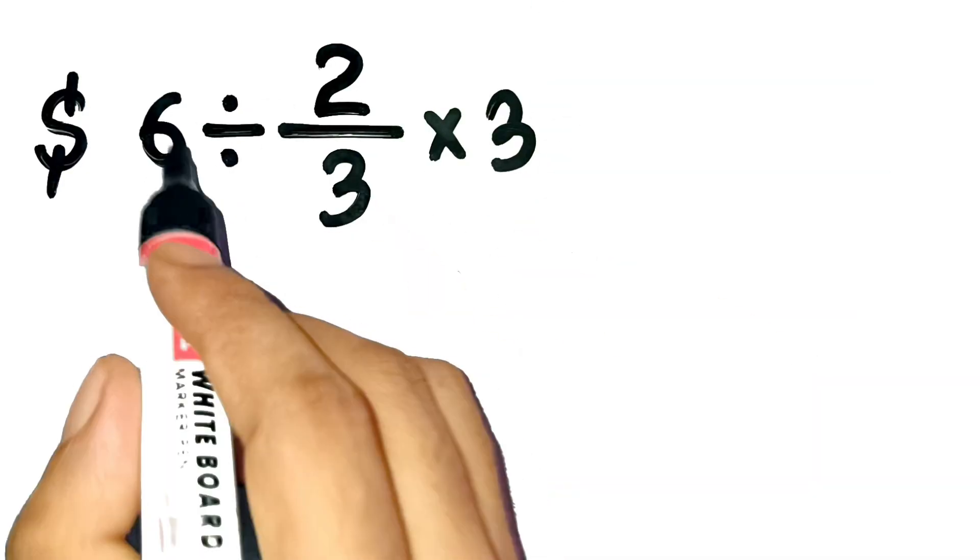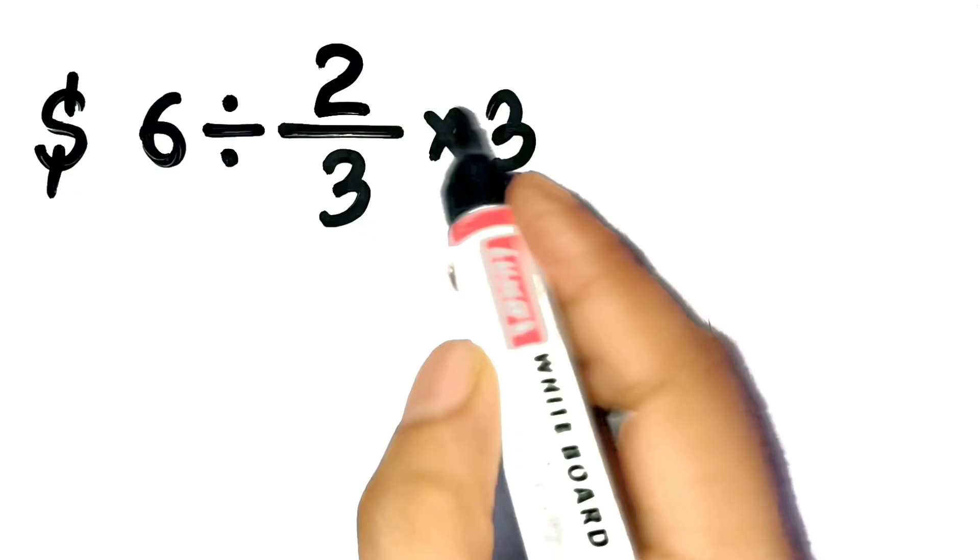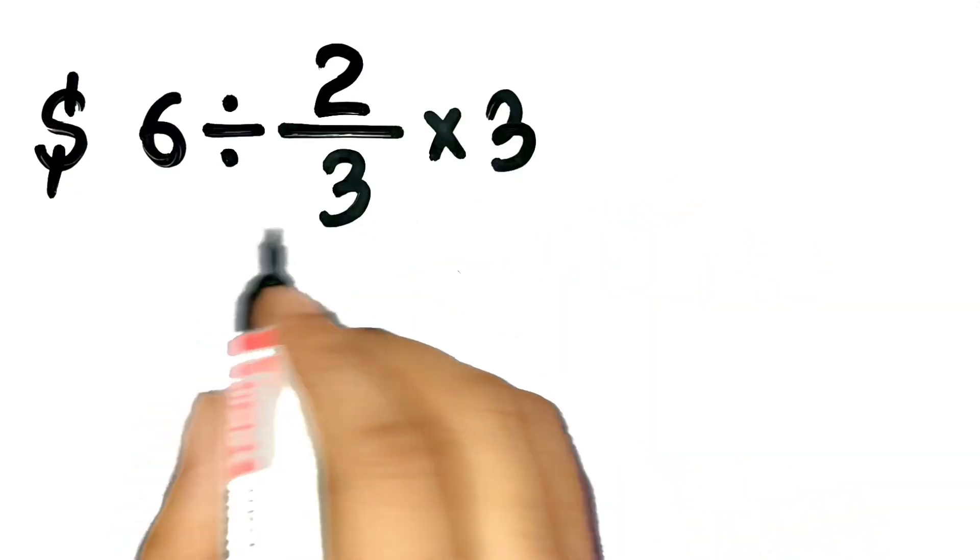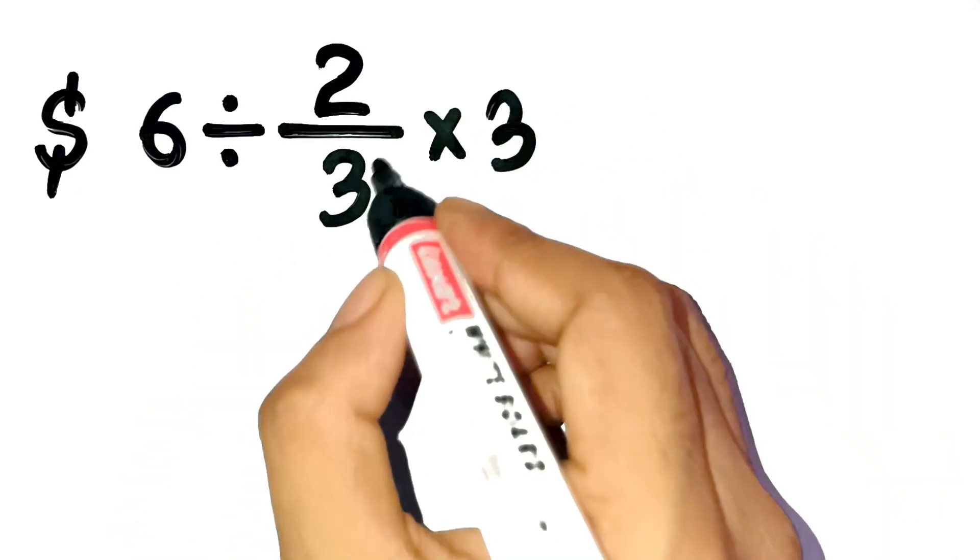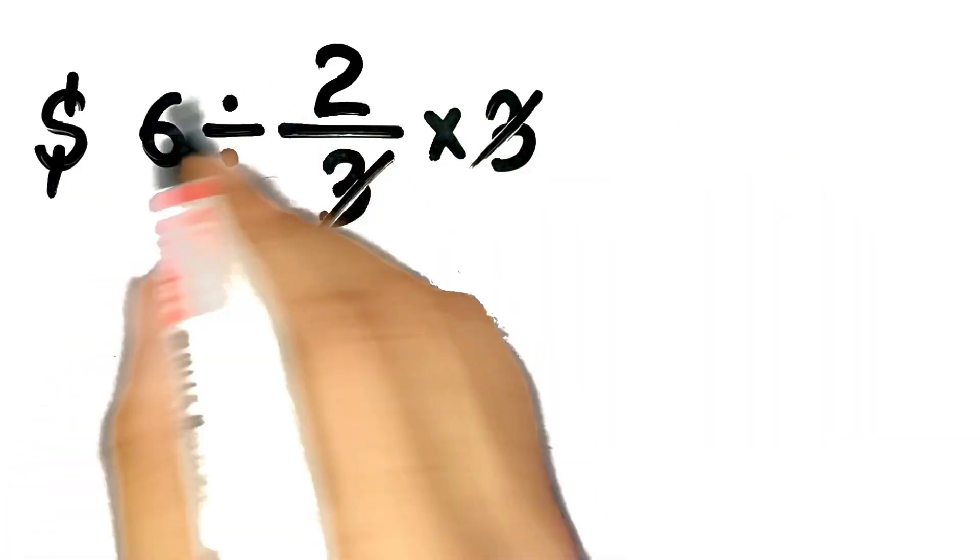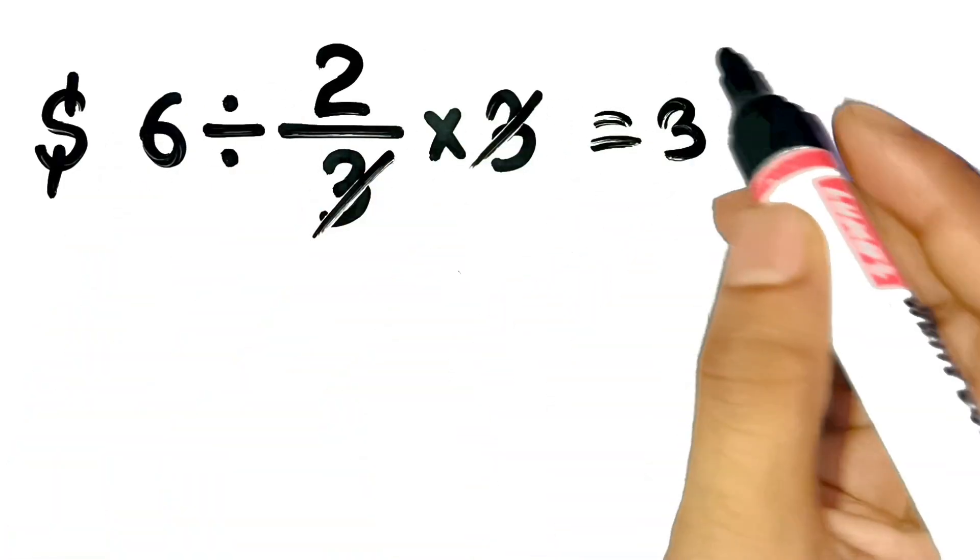We've got 6 divided by 2 thirds times 3. Most people glance at that and think, oh, easy, the 3's cancel, and 6 divided by 2 equals 3. Boom, done.